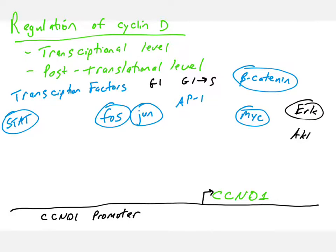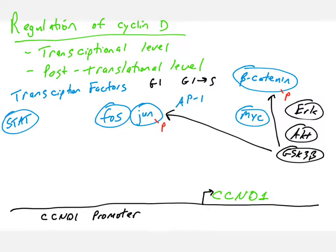In cells that are in G1, there are signal transduction kinase pathways that regulate protein activity. I've drawn three kinases: ERK, AKT, and GSK3 beta. When cells are in G1, ERK and AKT are inactive, and GSK3 beta is active. Under these conditions, GSK3 beta is phosphorylating beta-catenin and JUN on certain amino acids, making these transcription factors typically inactive. That means they are not activating transcription of the cyclin D1 gene — so the gene is kept off, and there are very low levels of cyclin D protein.